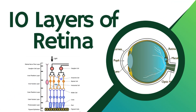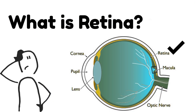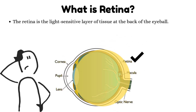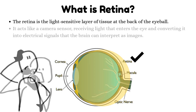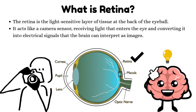The 10 Layers of Retina. What is retina? The retina is the light-sensitive layer of tissue at the back of the eyeball. It acts like a camera sensor, receiving light that enters the eye and converting it into electrical signals that the brain can interpret as images.